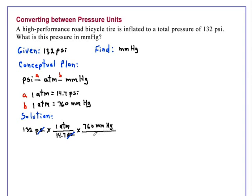Atmospheres cancel and to the correct number of significant digits, which is 3 based on the 132 psi, we have an answer of 6.82 times 10 to the third millimeters of mercury, or torr.